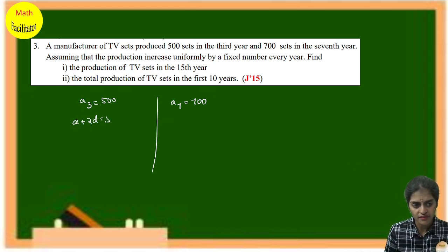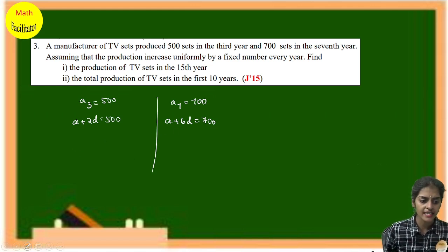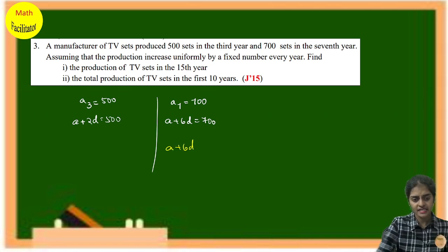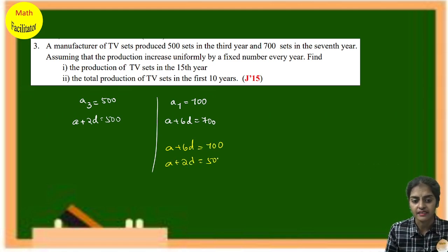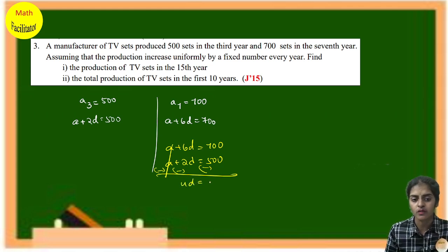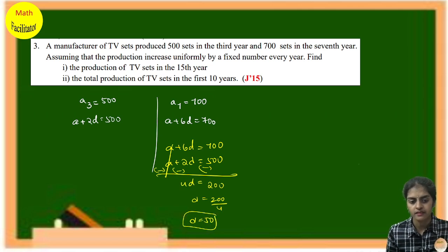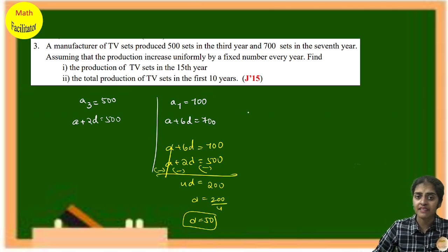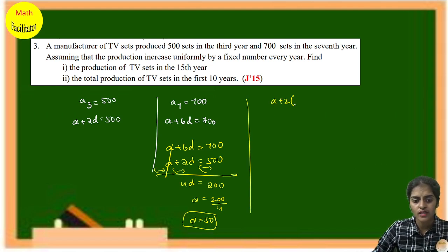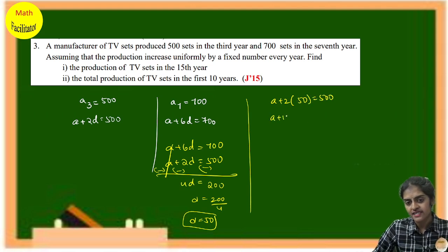Writing the equations: a + 2d = 500 and a + 6d = 700. Subtracting: 4d = 200, so d = 50. Substituting back: a + 2(50) = 500, so a + 100 = 500, giving a = 400.